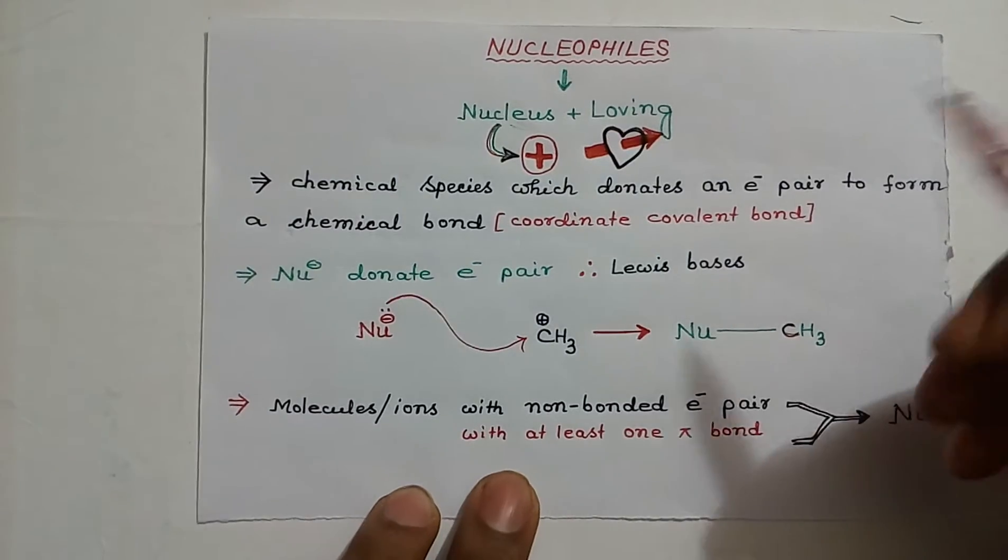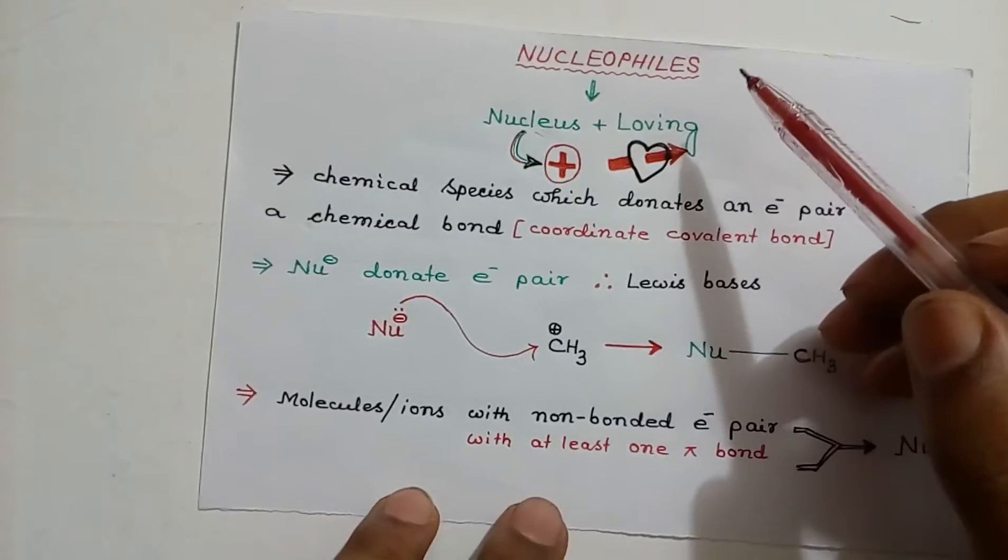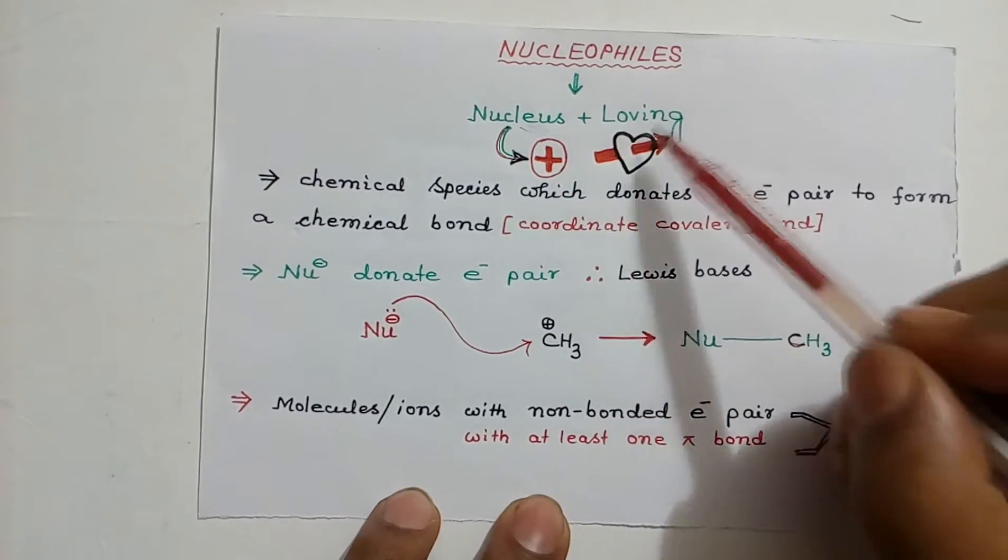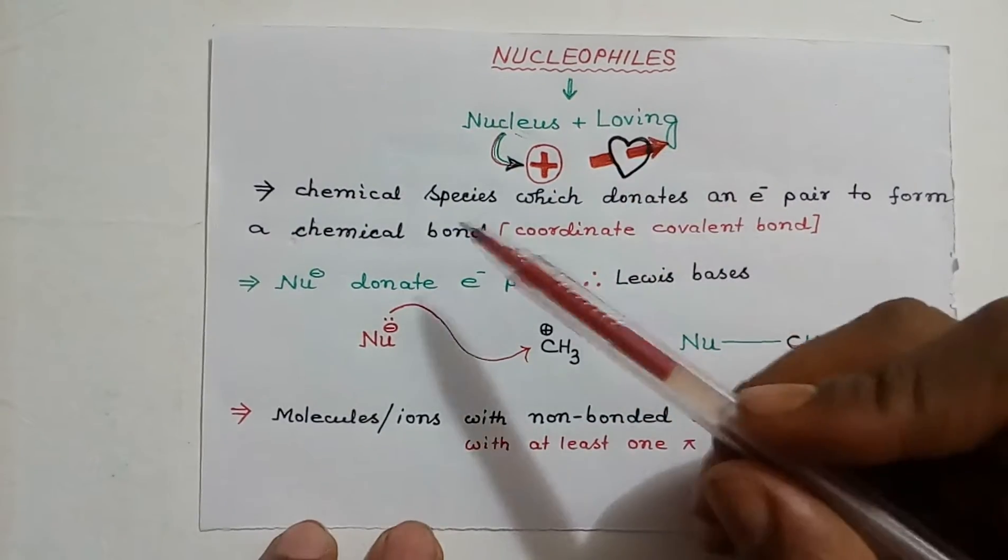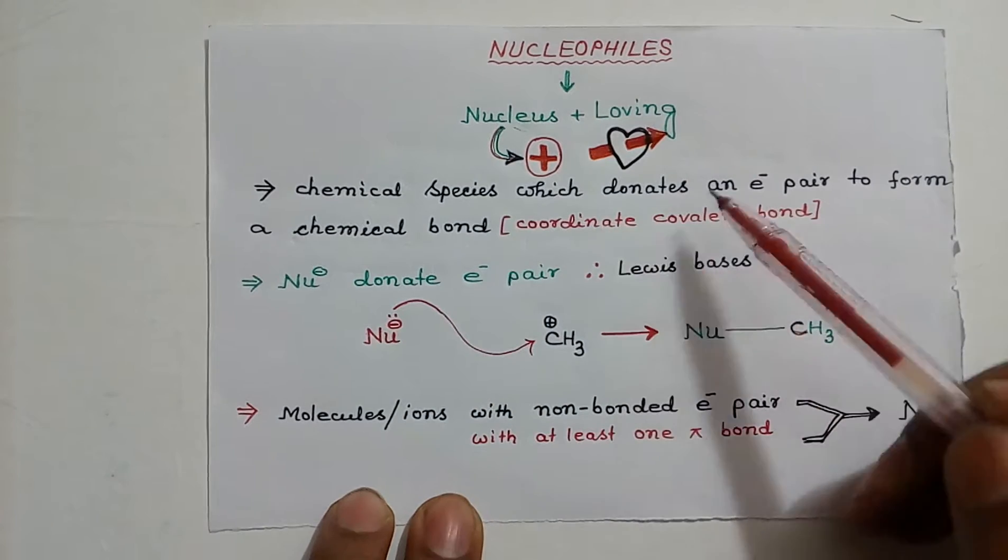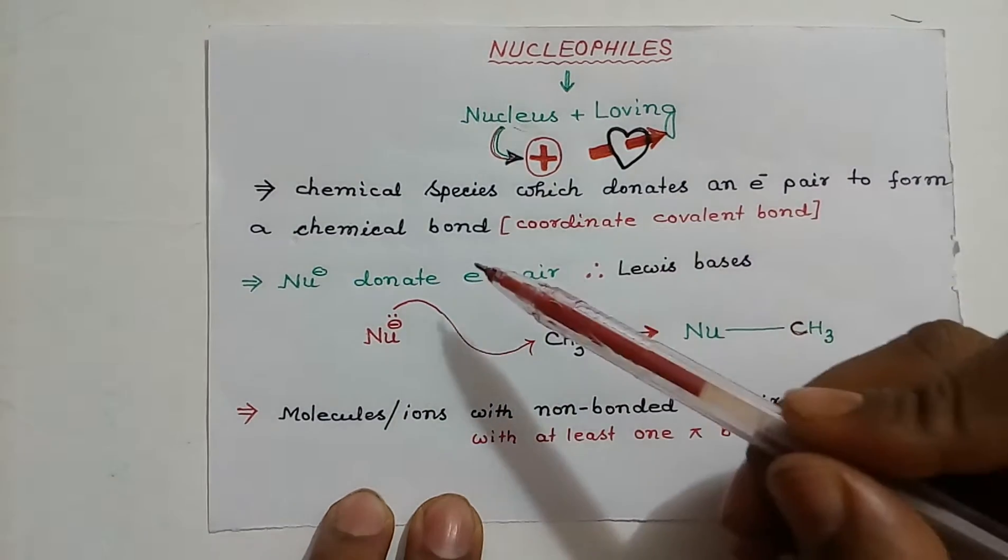Hello friends, today we will learn about nucleophiles. Nucleophiles are basically nucleus lovers. A nucleophile is a chemical species which can donate an electron pair to form a chemical bond.